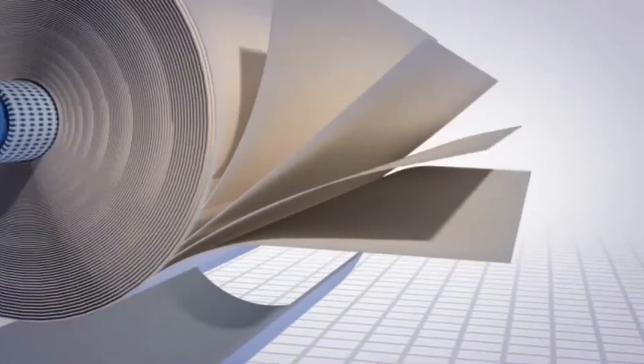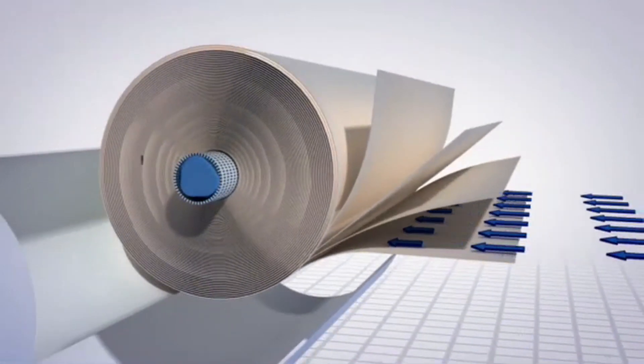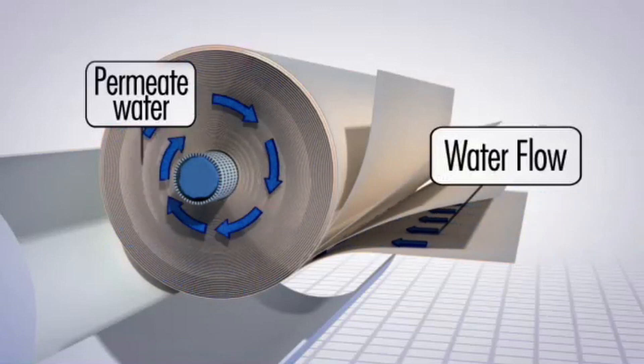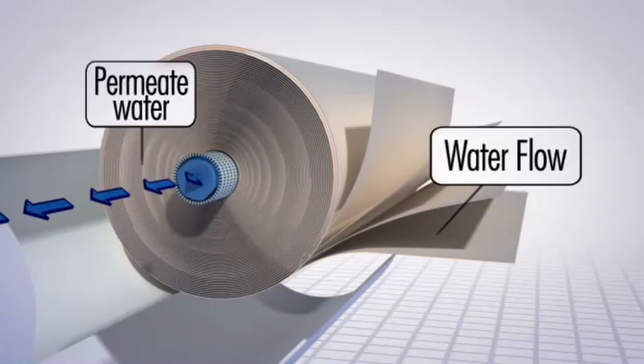Two streams of water are produced. Pure clean water or permeate flows across the membrane sheets and passes through the membrane layers to the inside core tube.